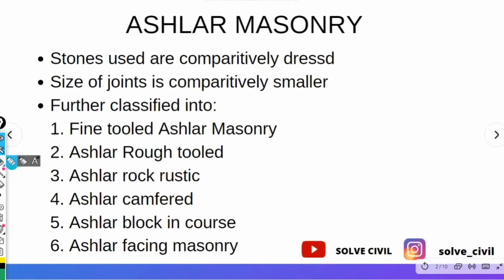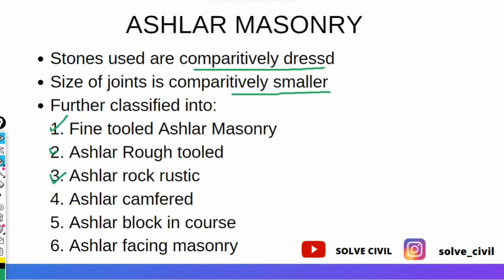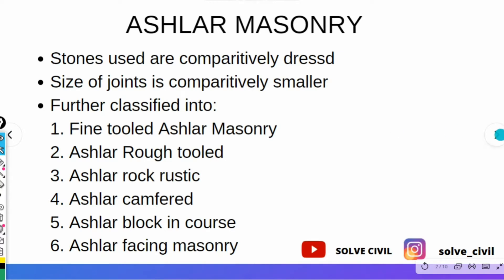The stones used in ashlar masonry are comparatively dressed, and the size of joints is comparatively smaller. Ashlar masonry can be further classified into: fine-tooled ashlar masonry, ashlar rough-tooled, ashlar rock rustic, ashlar camford, ashlar block in course, and ashlar facing masonry.